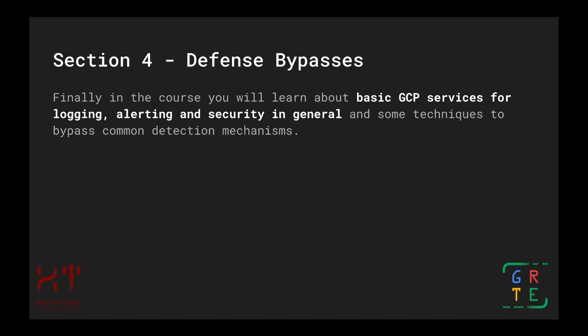In the final section — defense bypasses — we start by learning basic GCP services for logging, alerting, and security in general, then explore techniques to bypass common detection mechanisms inside GCP. As a red team professional I find this section very interesting, because to avoid detection in a cloud environment generating vast amounts of logs, you need to understand the behaviors defenders look for in order to avoid them and still perform a successful red team assessment.